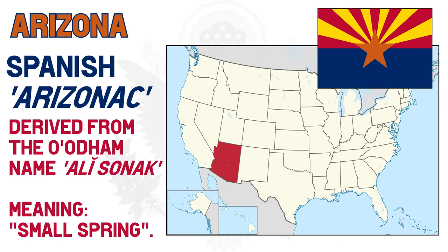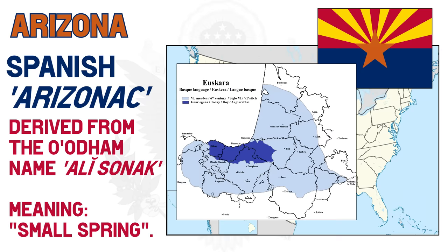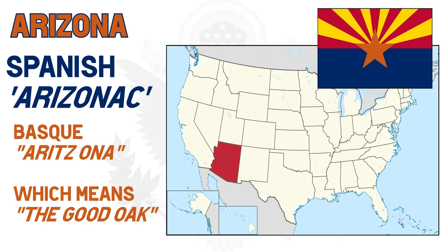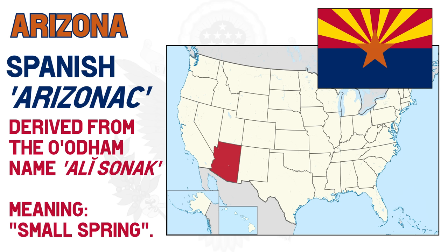O'odham was a native language. Although some point out that the Basque language also has the phrase Aritz-Ona, meaning 'the good oak,' as there were numerous Basque sheepherders in the area, it's more likely that the origin is the native word. Apparently there is a misconception that the state's name originated from the Spanish term Arida Zona, meaning 'Arid Zone' — this is considered folk etymology and is not accurate.